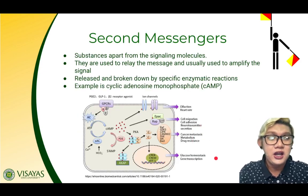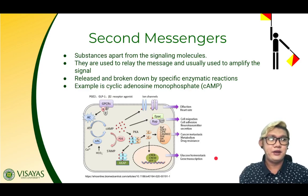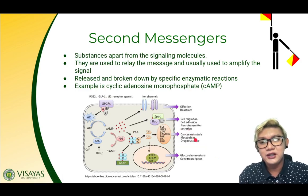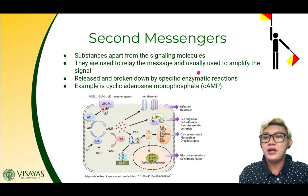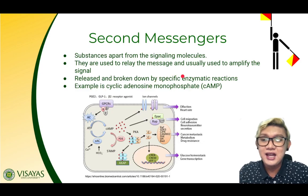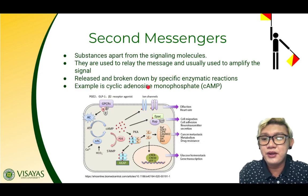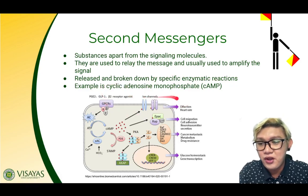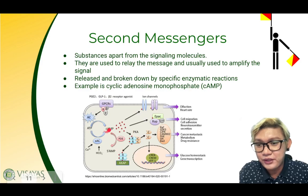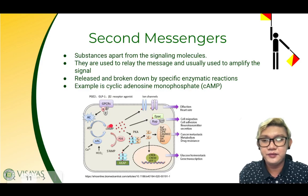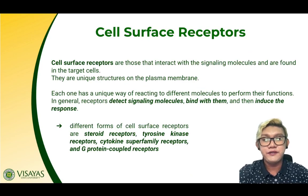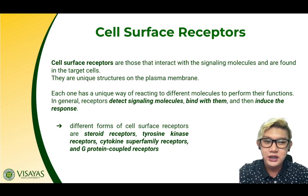Second messengers are also considered as signaling molecules because they relay the message. These are substances, apart from the primary signaling molecules, that are used to relay the message and are usually used to amplify the signal. They are released and broken down by specific enzymatic reactions. An example is cyclic adenosine monophosphate, or cAMP. Those are the different types of ligands or signaling molecules.